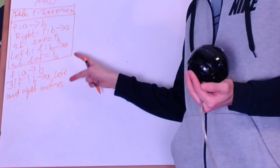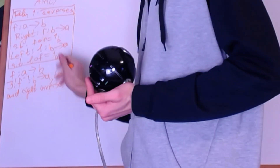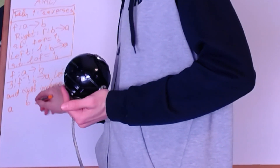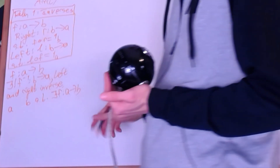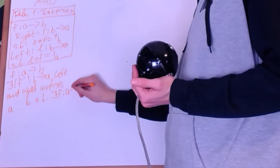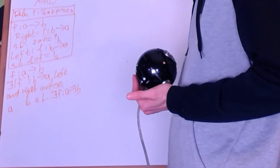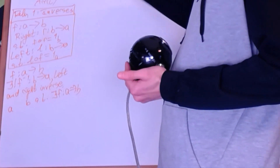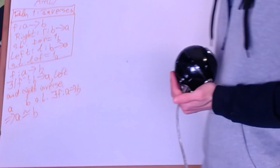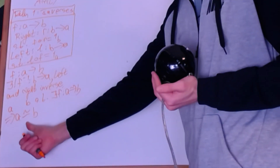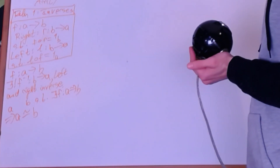An invertible arrow is also called an isomorphism. If I have two objects A and B such that there exists an isomorphism F between them — I'll write a tilde over the arrow to identify it as invertible — we call the two objects isomorphic and write a congruence between them. This equivalence via isomorphisms creates an equivalence relation on the objects of the category.